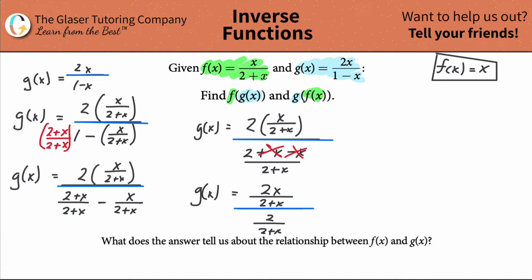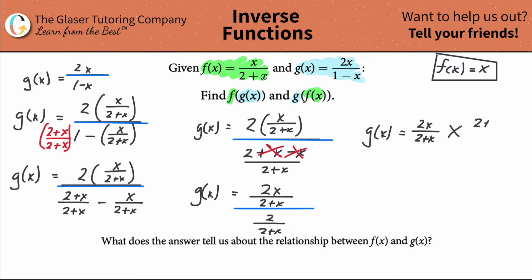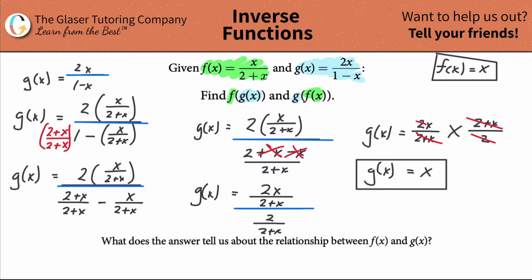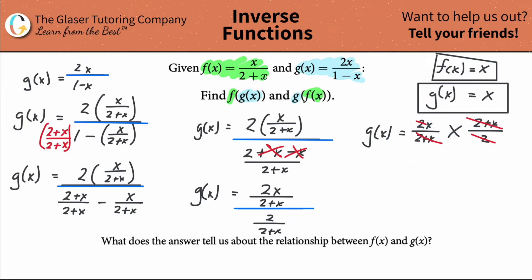So we take the numerator fraction and multiply by the reciprocal of the denominator. G of x equals two x over two plus x, times two plus x over two. The two plus x terms cancel, and the two and two cancel. The answer is the same thing — g of f of x equals x.